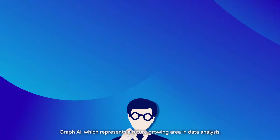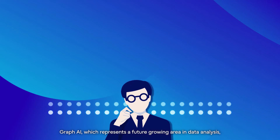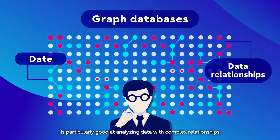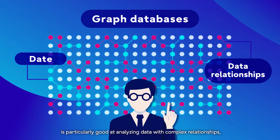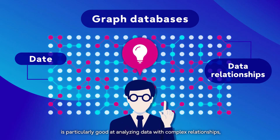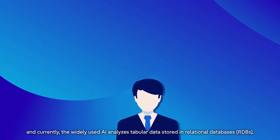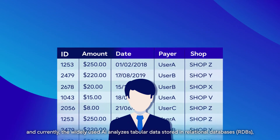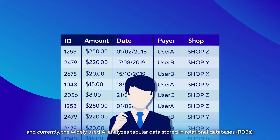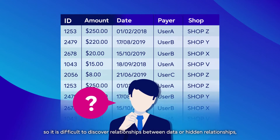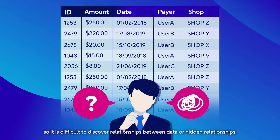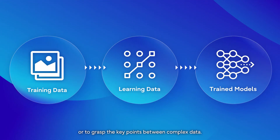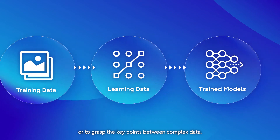Graph AI, which represents a future growing area in data analysis, is particularly good at analyzing data with complex relationships. Currently, the widely used AI analyzes tabular data stored in relational databases, so it is difficult to discover relationships between data, hidden relationships, or to grasp the key points between complex data.